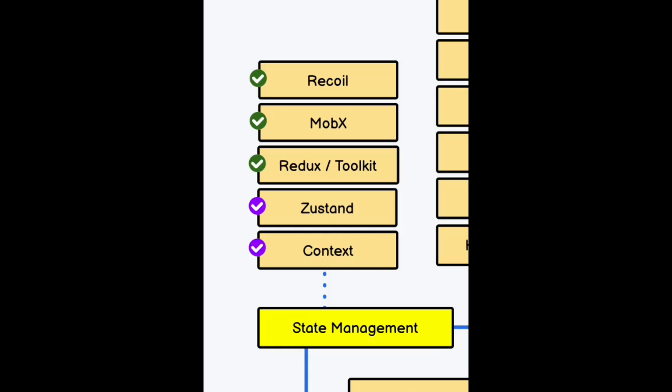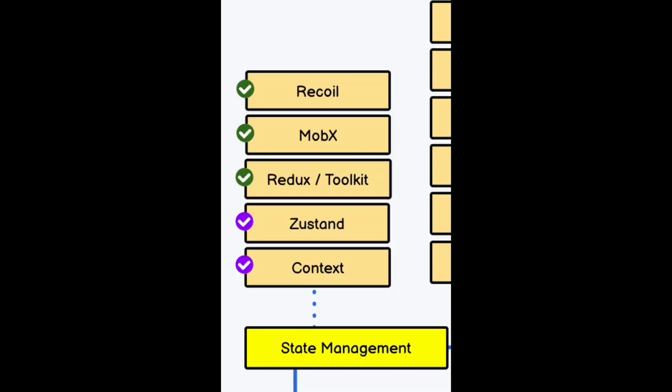The fifth module is state management. When you build your application, you have to manage all the data you want to share. Popular tools include Recoil, MobX, and Redux Toolkit — the most in-demand tool for state management. We also have Zustand and Context. Context is a built-in React feature good for small applications, but for larger ones like e-commerce stores, Redux Toolkit is the most preferable and many industries require you to know it.